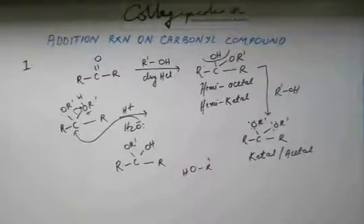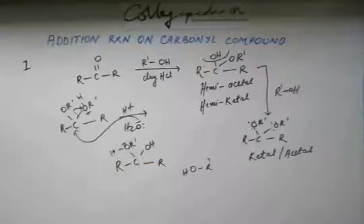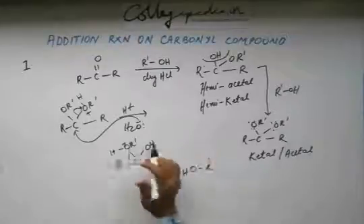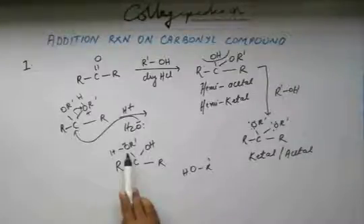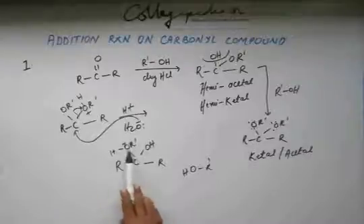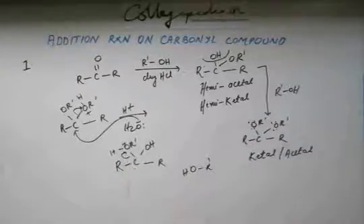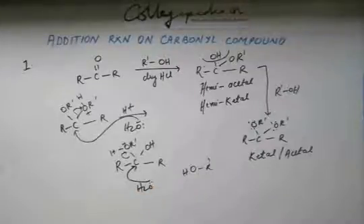If you carry out one more hydrolysis, then this alcohol will also leave because this oxygen, because of the plus I effect of R', this oxygen is more basic than this oxygen. So H plus will preferably come on the oxygen which is the part of alcohol. So now this becomes a good leaving group and this will leave. When it leaves, carbon gains plus charge. When carbon gains plus charge, oxygen will again attack carbon and two OH groups will get added.